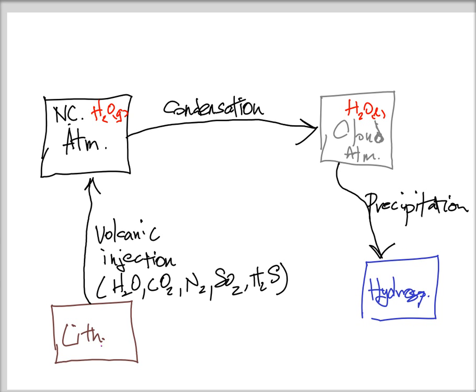At the beginning here, we had a volcano that is erupting. So the lithosphere, shown here at the bottom, that turns out to be the source of the volcanic eruptions. And through the process of injection, various gases are introduced into the non-cloud part of the atmosphere.